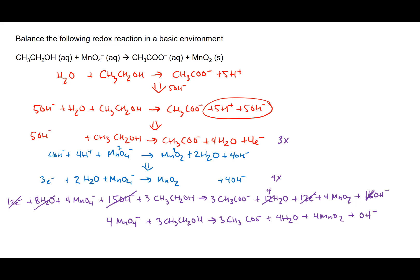We can verify this by checking the charges: 4 negative charges from MnO4- on the reactant side, and 4 negative charges on the product side (3 from acetate, 1 from OH-). Manganese: 4 atoms on each side. Carbon: 3 CH3 groups on each side — 3 and 3. Oxygens: 19 on the reactant side (16 + 3) and 19 on the product side (6 + 4 + 8 + 1). Hydrogens: 9 on the reactant side (3×3) and 9 on the product side (8 + 1). Everything checks out.